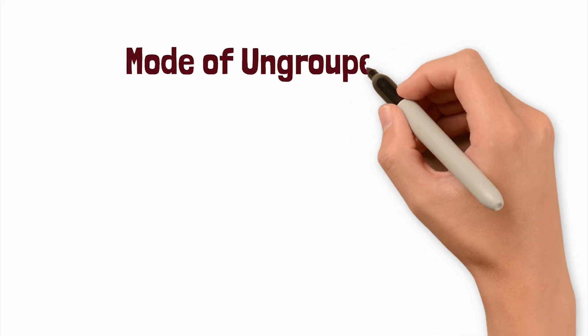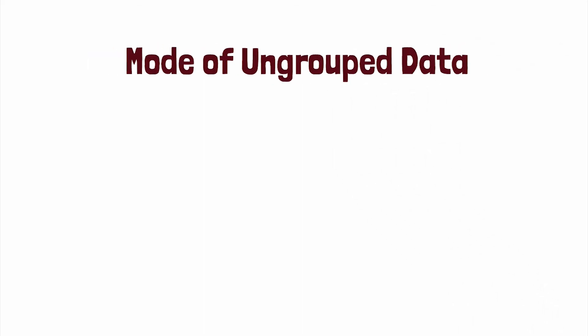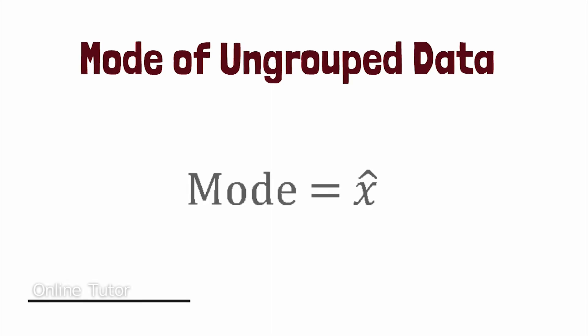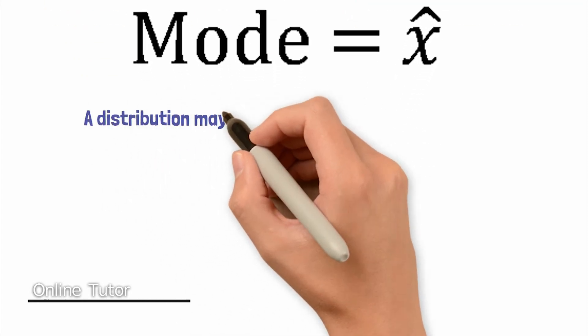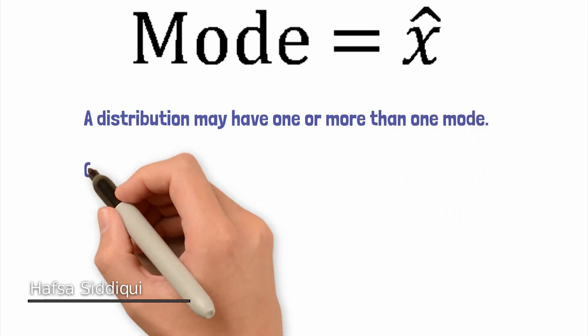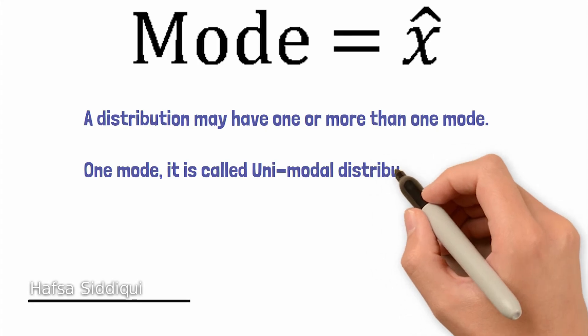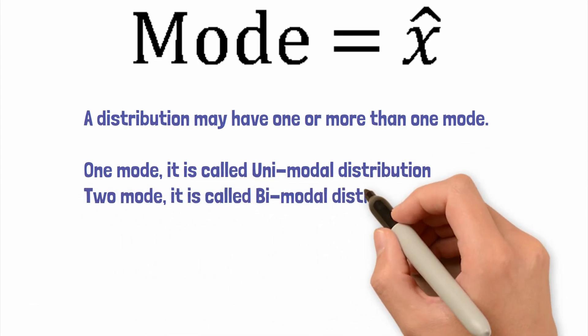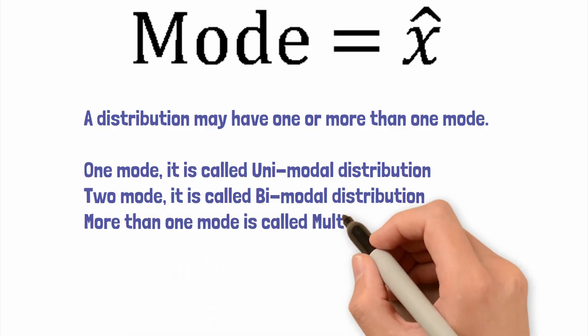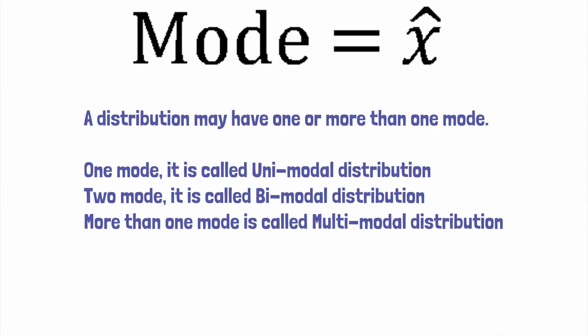In today's lecture, we will see the mode of ungrouped data — data that is ungrouped, where there are no intervals and no boundaries. The mode symbol will be shown. There can be more than one mode. If one value is repeatedly the most frequent, that is called unimodal. If there are two values repeated the maximum number of times, that is called bimodal. And if more than one mode exists, it is called a multimodal distribution.